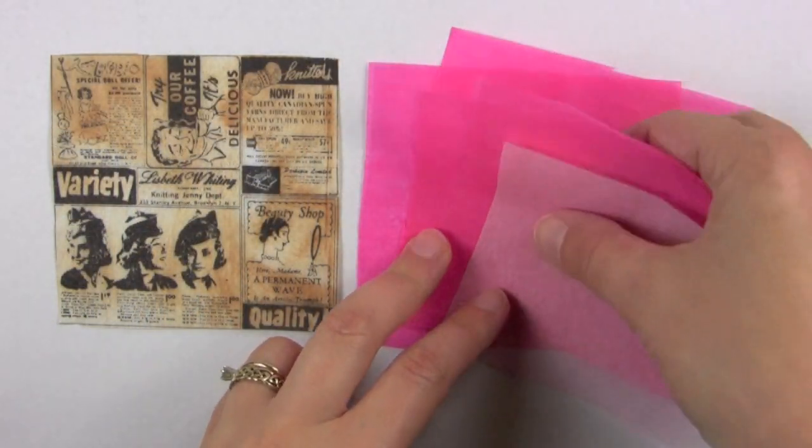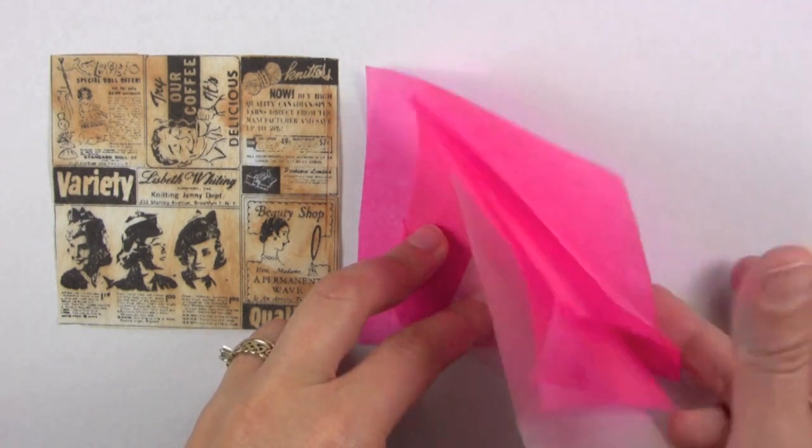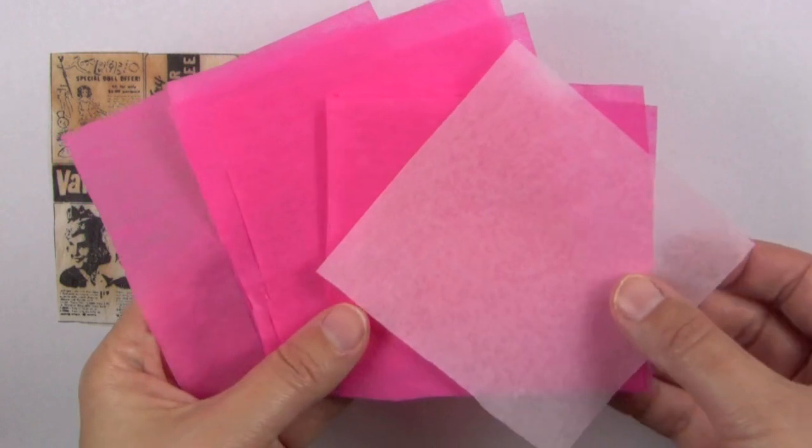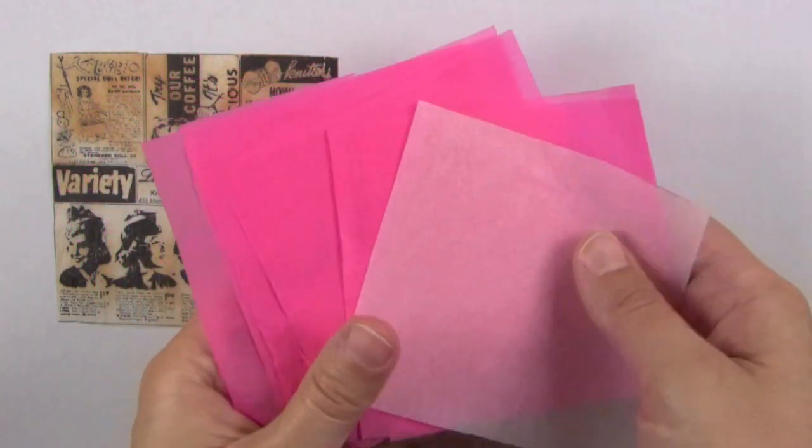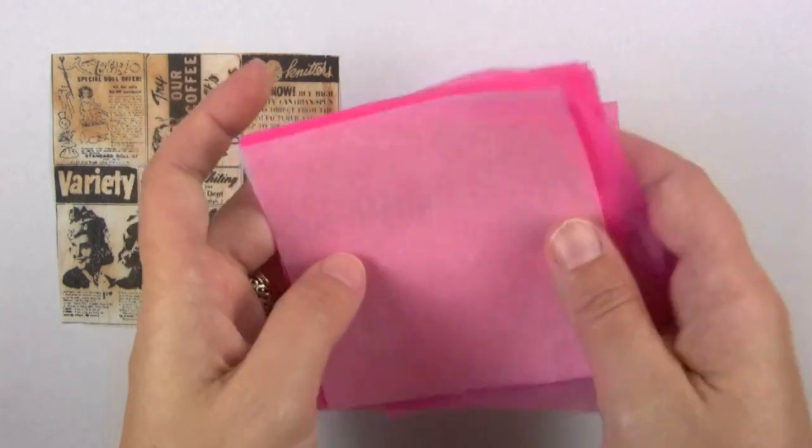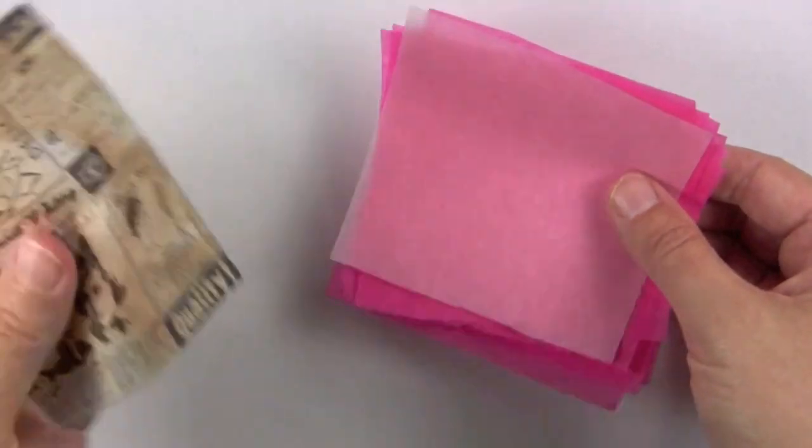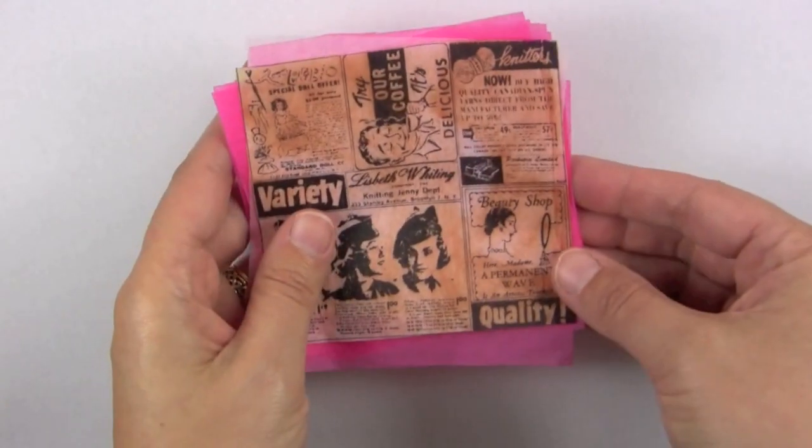Okay now for the next step. I went ahead and cut out seven different squares of this pink tissue paper and I'm using two shades here. This is a really light pink and then here's a dark pink and I just cut them out to be the same size as the stamped image.